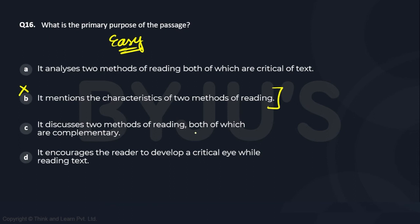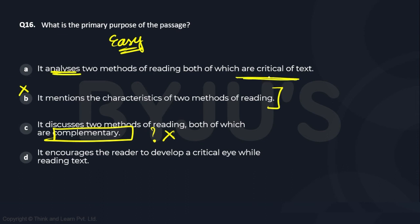Option C says it discusses two methods of reading, both of which are complementary. But the passage does not say they complement each other — eliminated. Option D says it analyzes two methods of reading, both of which are critical of the text. Yes, it does analyze both, and both are critical of the text, so D fits. Option E encourages the reader to develop a critical mindset — no such exhortation is made; in fact, these methods are criticized. So A is the answer here. Easy question.